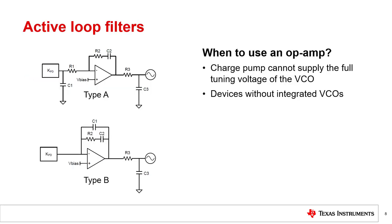Passive loop filters are generally preferred due to reasons of lower cost and lower noise. In some cases where the charge pump cannot supply the full tuning voltage of the VCO, an active filter may be preferred. Typically, these are devices without an integrated VCO. On the left are two common types of active loop filters.